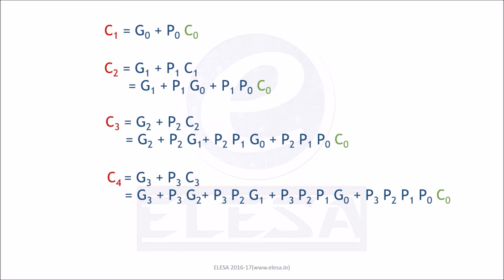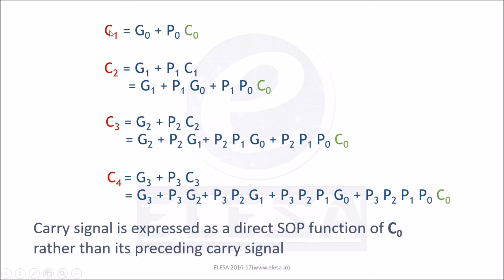Note that the carry signal of each stage — that is, C1, C2, C3 and C4 — is expressed as a direct sum of products function of C0, rather than its preceding carry signal. Remember that Pi is nothing but Ai XOR Bi, and Gi is nothing but Ai·Bi, and C0 is also our input bit. So all the carries generated in each stage are dependent upon the inputs of the respective stage. This is the logic for designing our carry lookahead adder.